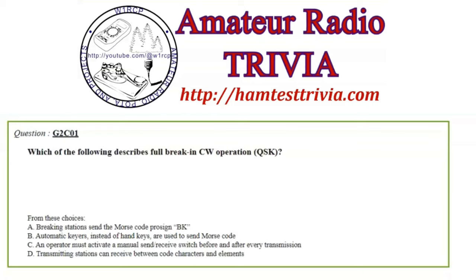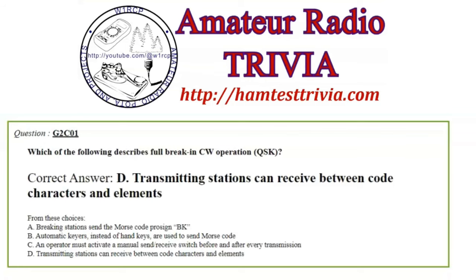Which of the following describes full break-in CW operation? QSK. The choices are: A) Breaking stations send the Morse code prosign BK, B) Automatic keyers instead of hand keys are used, C) An operator must activate a manual send-receive switch before and after every transmission, or D) Transmitting stations can receive between code characters and elements. Full break-in means you can hear in between what you're sending — transmitting stations can receive between code characters and elements. That's the answer, in element 2, section C, question 1.